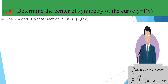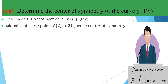Here we have a horizontal asymptote y = ln(2) intersecting two vertical asymptotes x = 1 and x = 3, giving intersection points (1, ln(2)) and (3, ln(2)). When there are two such intersection points, the center of symmetry is their midpoint. The midpoint of (1, ln(2)) and (3, ln(2)) is (2, ln(2)), which is the center of symmetry.